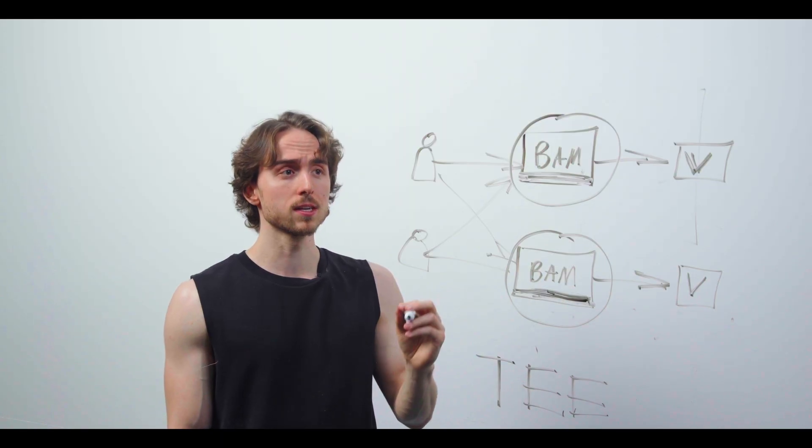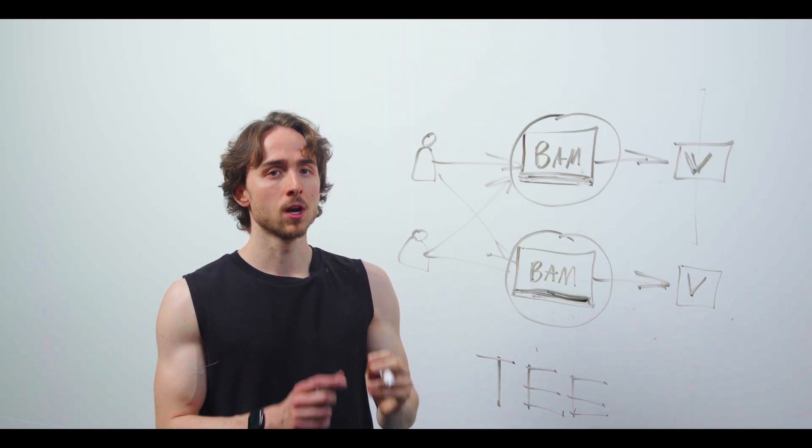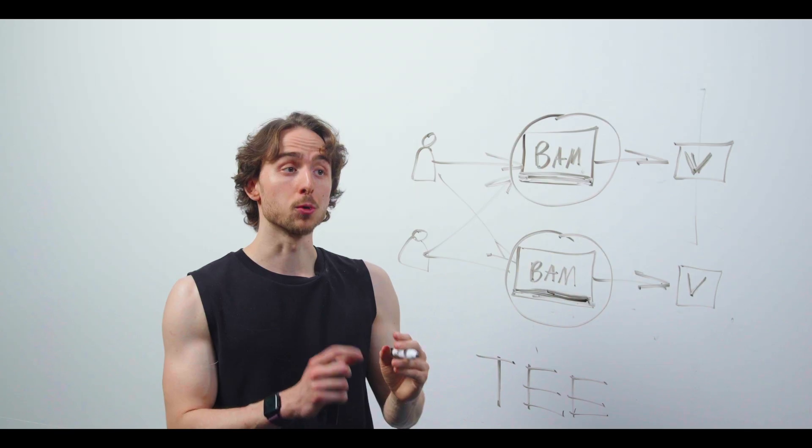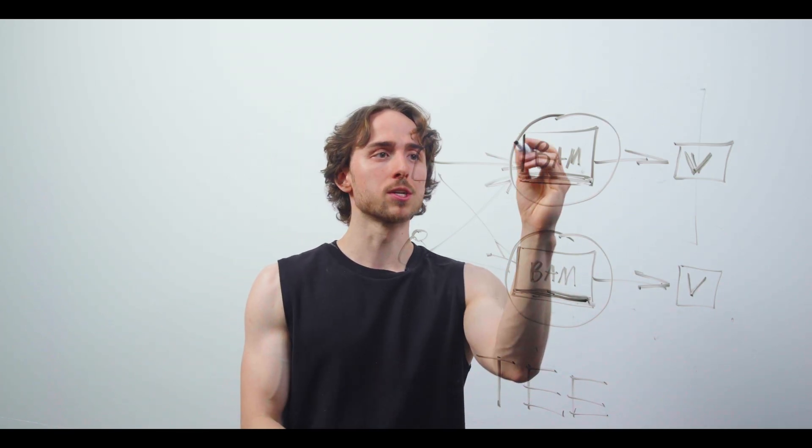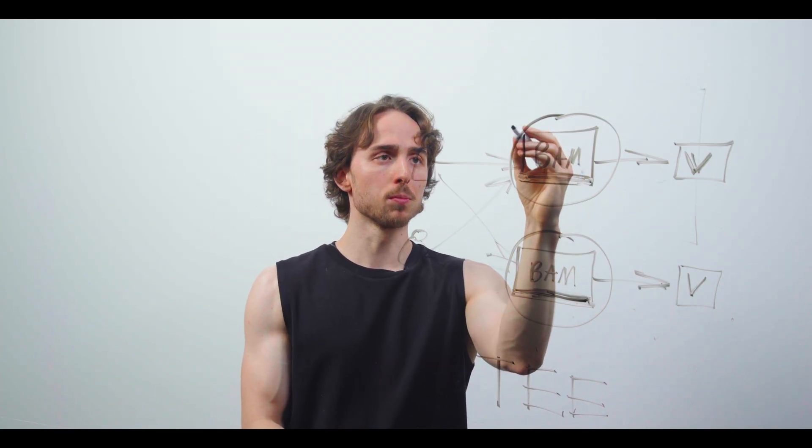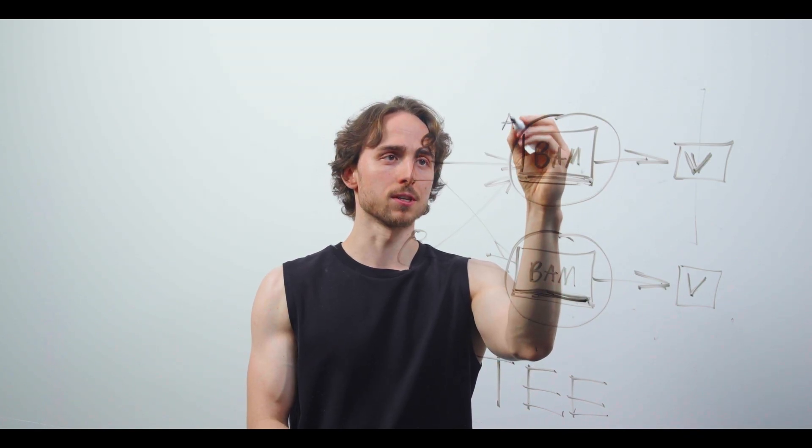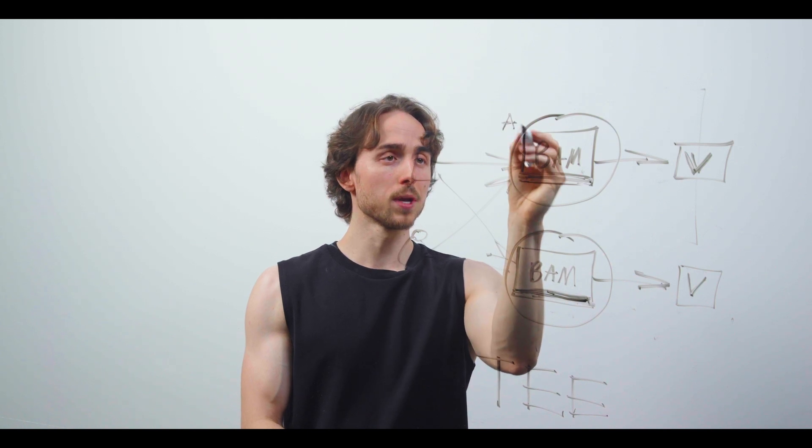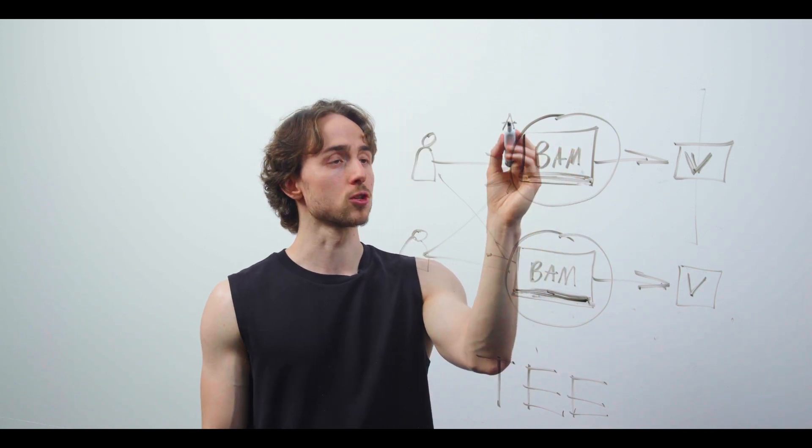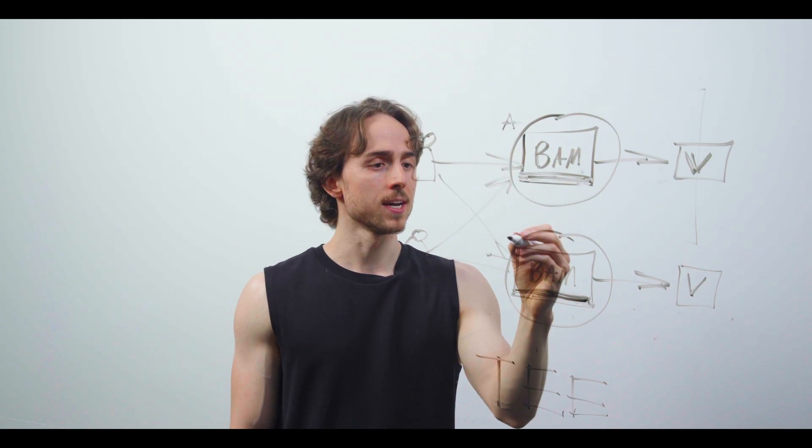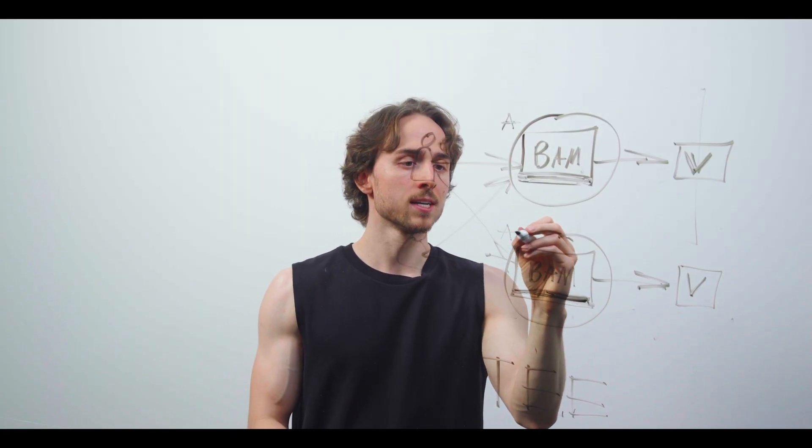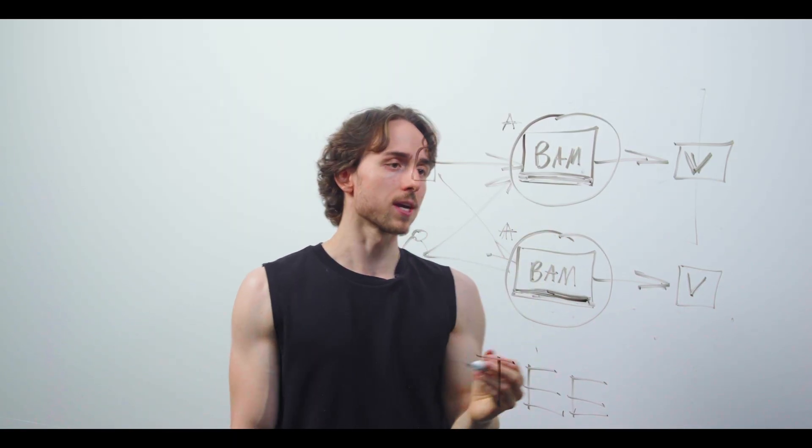This will basically allow you to confirm what software you are interfacing with when you interact with a BAM node. You will be able to get, for instance, some kind of signal. For instance, we can just use letter A, and you will be able to know that this node is running software A, version A. And the same way you'll be able to tell that another node is also running A.